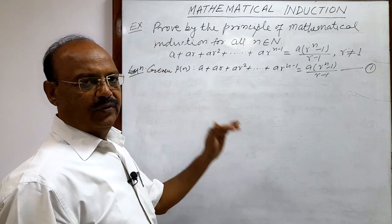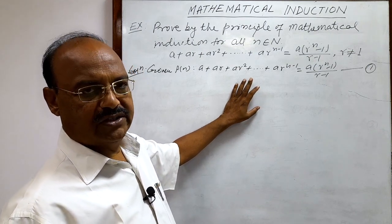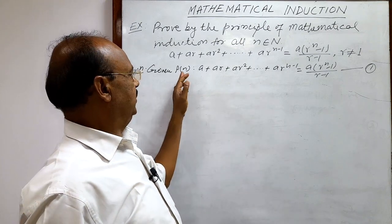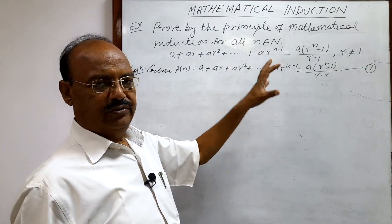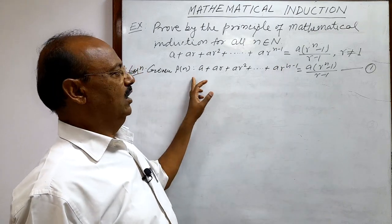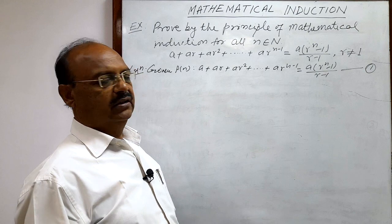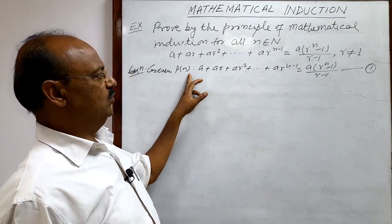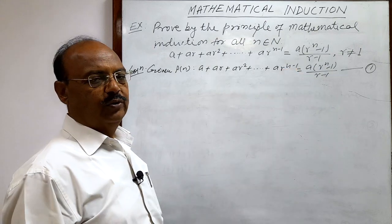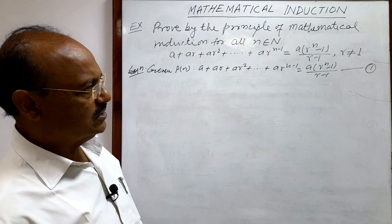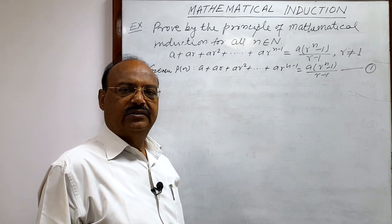First step: we have to show that statement P(n) is true for n = 1. Second step: we put n = k where k is a positive integer. Note that we use k instead of the usual r because r is already used in the formula, which would cause confusion. We assume P(k) is true. Third step: we have to show that P(k+1) is true, meaning when we put n = k+1 in relation number 1, the statement holds. By completing these three steps, we conclude the given statement is true for n = k+1.